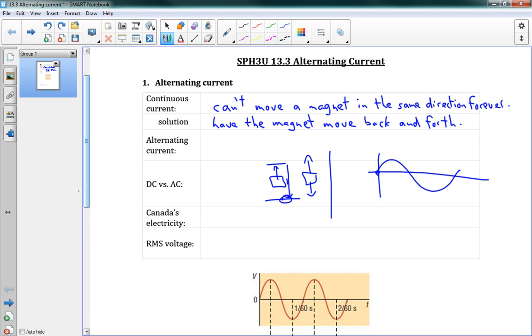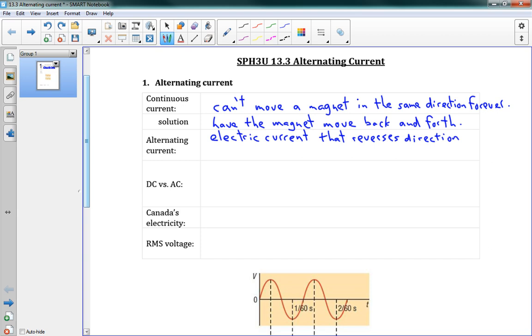We call that a sine wave. And that is what we call alternating current. Alternating current is electric current that reverses direction periodically. Periodically just means at some sort of constant rate with a period.